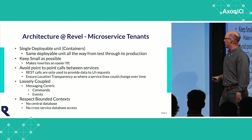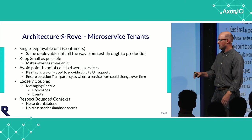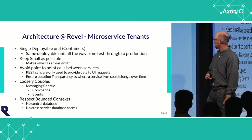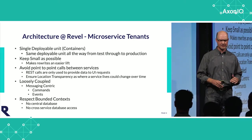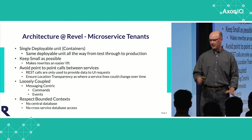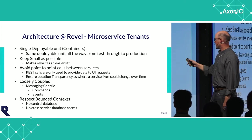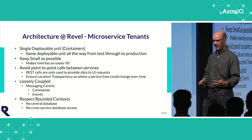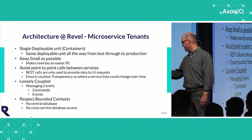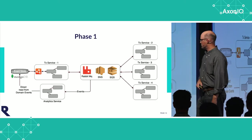When we went down the microservices path, we had some tenets we went after. We wanted a single deployable unit, keep it as small as possible so the lift would be easy. We did not want point-to-point calls — from the start we got away from that, so commands and events were big for us right away. It helps with deployment — A doesn't have to be up for B to be deployed. Loosely coupled, message-centric. Respect bounded contexts — no central database; we wanted every service to have its own data store. No cross-database access — although we violated that just a little bit in one spot.